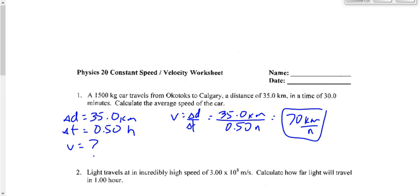If I asked for average velocity instead, it would be 70 to the south — negative 70 — because Okotoks is south of Calgary. If you're confused about direction on a quiz or test, you can ask me whether Okotoks is north or south of Calgary. This is physics class, not geography class, so if you can do the physics, I don't want to penalize you for not knowing geography.